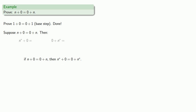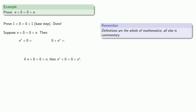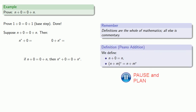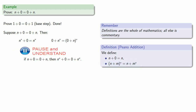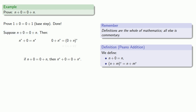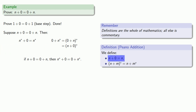Let's consider the successor of n plus zero, and zero plus the successor of n. Definitions are the whole of mathematics — all else is commentary. Our definition of addition tells us: if I add zero, I get the same thing I started with, so that's n-star. Our definition also tells us what happens with zero plus n-star — it's the successor of zero plus n. But we assumed n plus zero equals zero plus n, so the term inside the parentheses is really n plus zero's successor. And n plus zero is just n, so this is the successor of n. Therefore n-star plus zero and zero plus n-star are the same thing — n-star plus zero equals zero plus n-star.